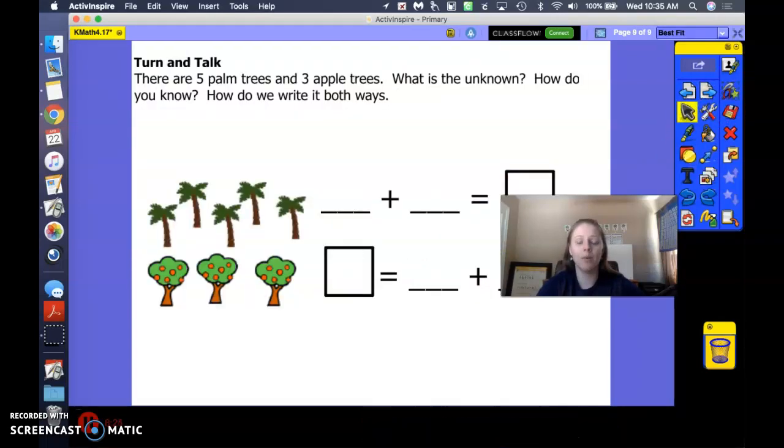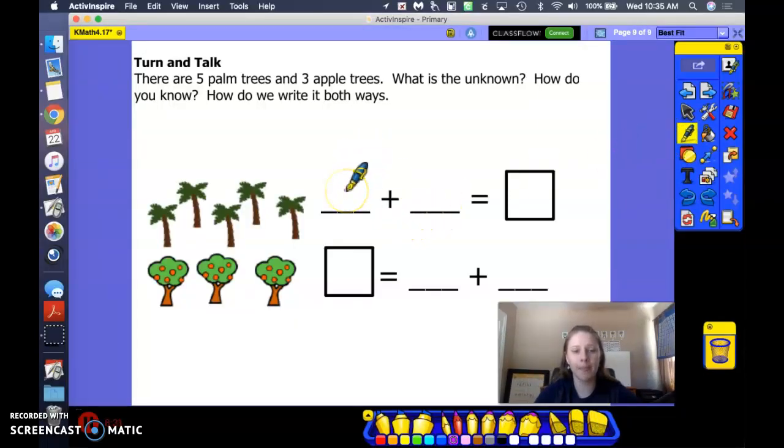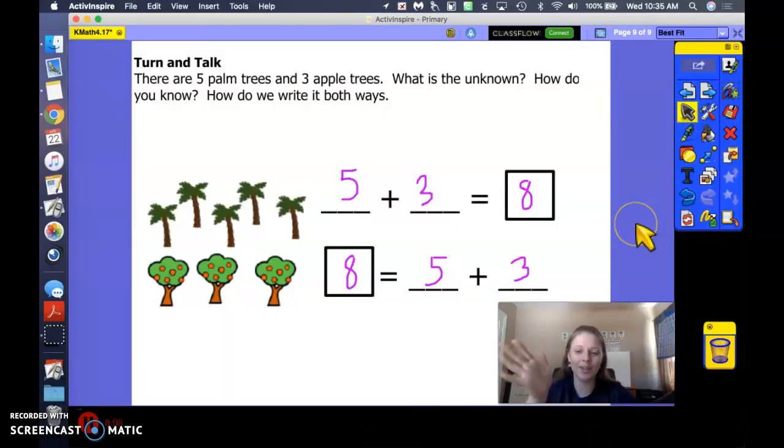Our last problem with some trees. Go ahead and count up the palm trees for me. 5. Good. Count up the apple trees for me. 3 apple trees. And how many trees all together? 8. Good. And let's flip that sentence and write it a different way to represent the same thing. 8 is the same as 5 and 3. Well done, friends. Thanks for joining me.